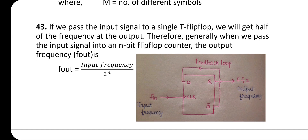If we pass the input signal to a single T flip-flop, we get half the frequency at the output. When we pass the input signal to an n-bit flip-flop counter, the output frequency f_out = f_in / 2^n, where n is the number of bits in the flip-flop counter.